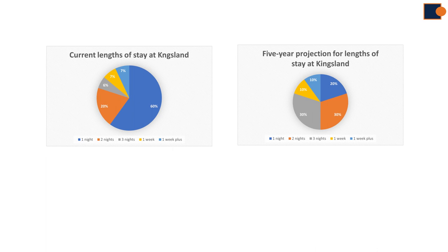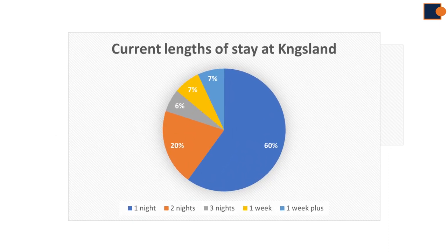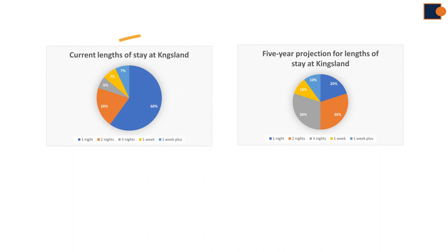Here you can see tourist stay periods at Kingsland, shown in the current and after five years period. In addition, data is presented in percentage. There is a change of period and comparison as well. For example, you need to compare differences of staying period duration — one night, two nights, three nights, a week, and more than a week — and also explain any changes between now and after five years. Always keep in mind what time frame is required to describe the graph; here you need to present current and future time.